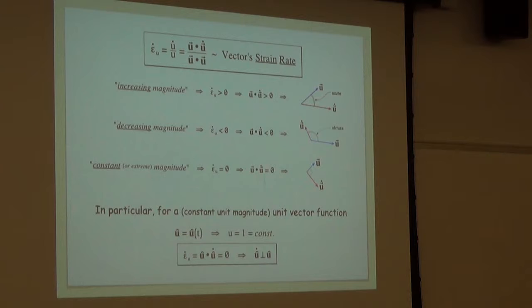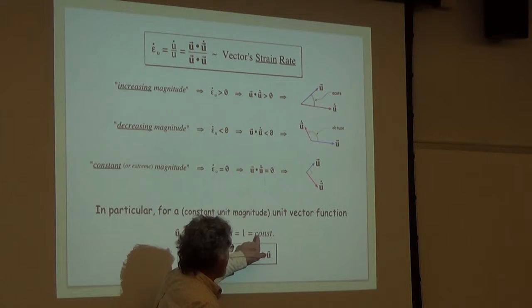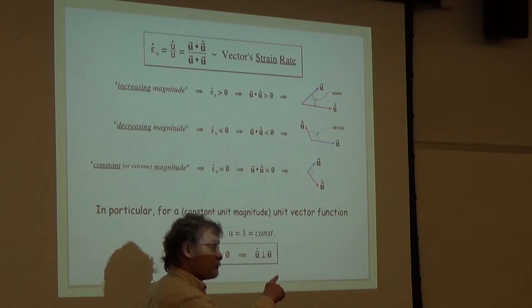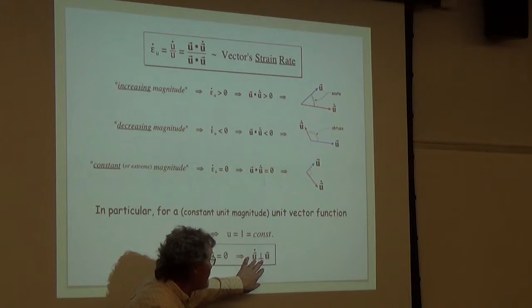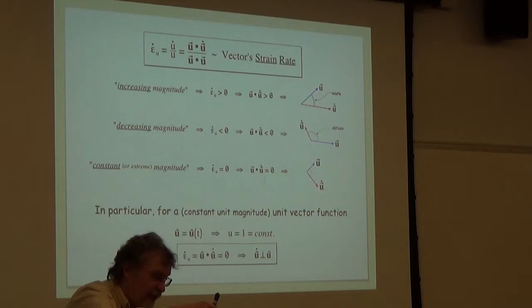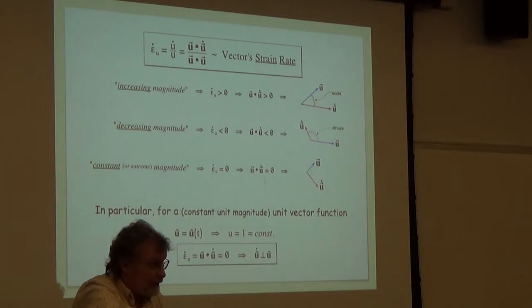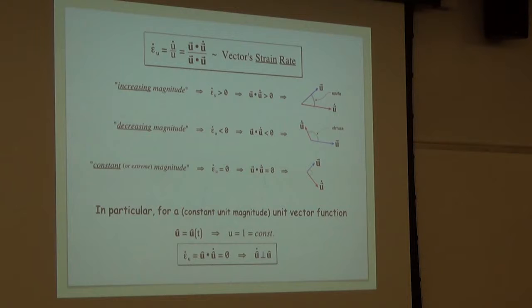Unit vector functions are very important, and we'll see why next week. A unit vector function is a vector function where the magnitude is not just constant but equal to one. So if you're thinking about the derivative of smoothly varying unit vectors, that falls into the category of constant magnitude, meaning the derivative of a unit vector is always going to be perpendicular to it. The derivative at any instance is going to lie in the yellow plane — it's going to always be perpendicular to the unit vector.